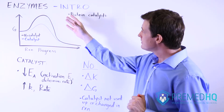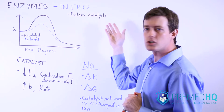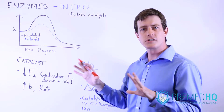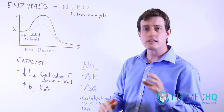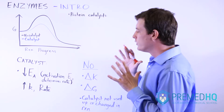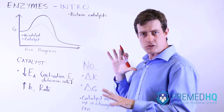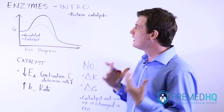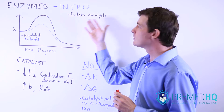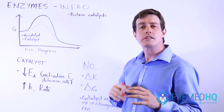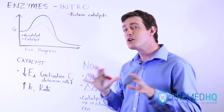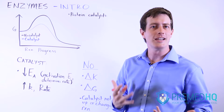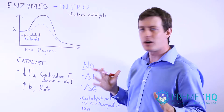An enzyme in the body is a protein that serves as a catalyst. This is important because a lot of reactions happen spontaneously at various rates, but in order for the body to have control over what reactions are occurring and maintain homeostasis, it helps to have enzymes — catalysts that we can produce — allowing us to control the degree to which certain reactions go forward. That's a major part of maintaining homeostasis within the body's physiology.